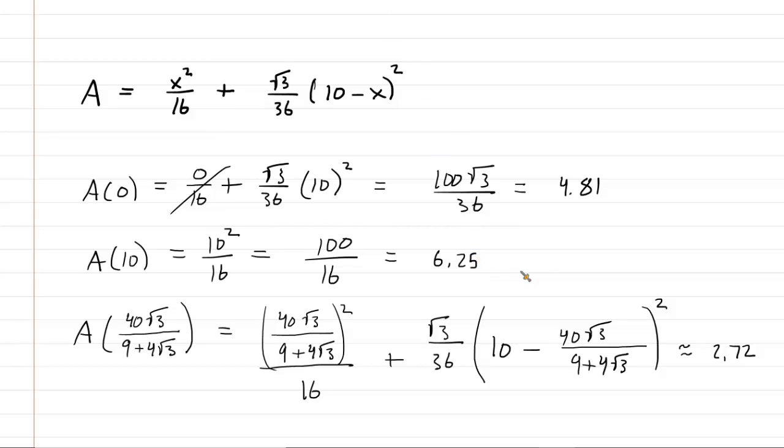So in this closed interval method, what we're going to realize is that the smallest value for the area, which is 2.72, would be the absolute minimum. We'll just write absolute min right here. And then the largest value we get is the absolute max. So this turns out to be the absolute max area right here.